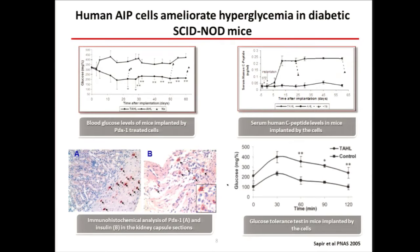When we implanted the cells in diabetic SCID mice, the human transdifferentiated liver cells ameliorated diabetes. We could follow human C-peptide in these mice — the implanted cells were placed under the kidney capsule — and when you remove the kidney with the cells, the mice revert to hyperglycemia and human C-peptide is no longer detectable.